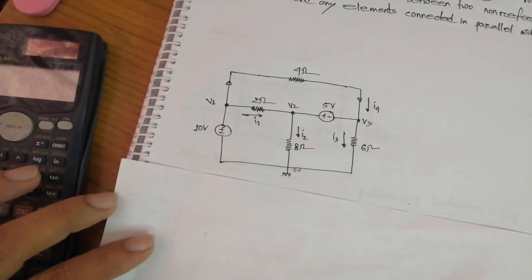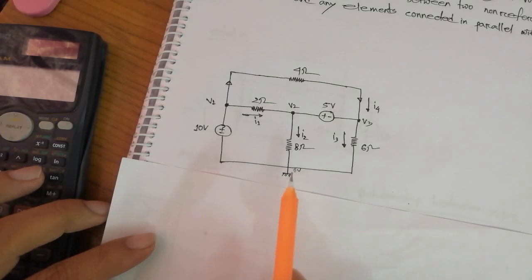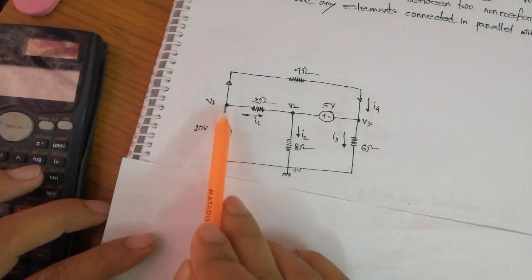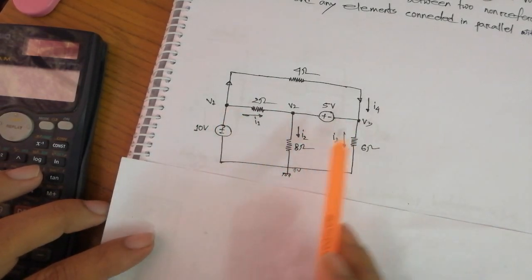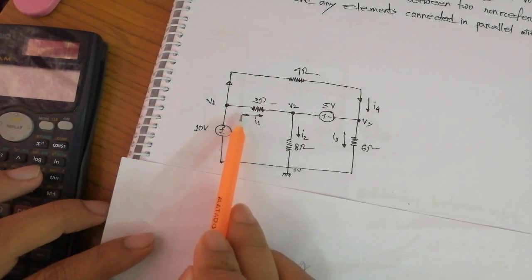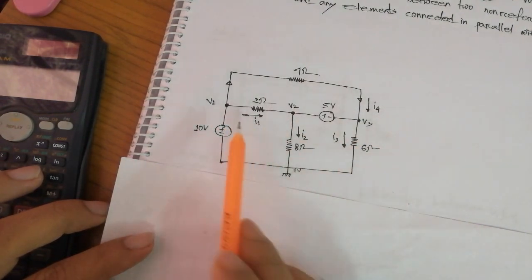It can be shown that this node is connected around the right node. Here is V1 node, V2 node, and V3 node. The same date is the current flow.